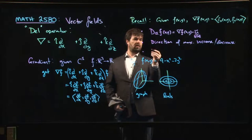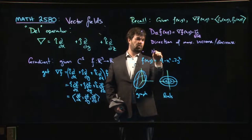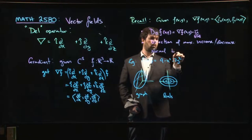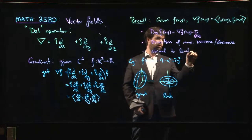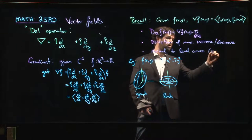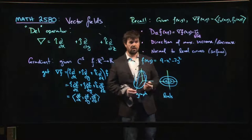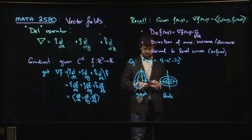We also know that the gradient is going to be normal - it's a normal vector to the level curves, or level surfaces if we were doing this for a function of three variables.